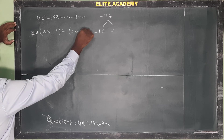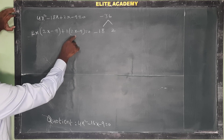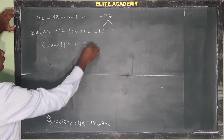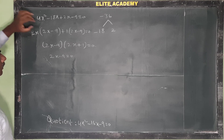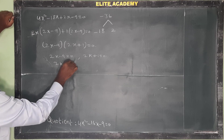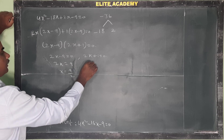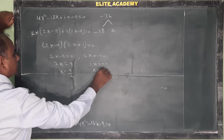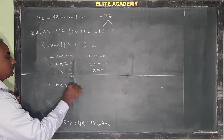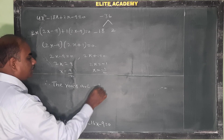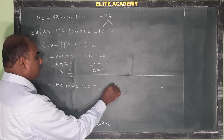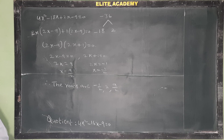Factoring gives (2x minus 9)(2x plus 1) equals 0. Therefore either 2x minus 9 equals 0, giving x equals 9/2, or 2x plus 1 equals 0, giving x equals minus 1/2. The three roots of the equation in increasing order are: minus 1/2, 2, and 9/2.